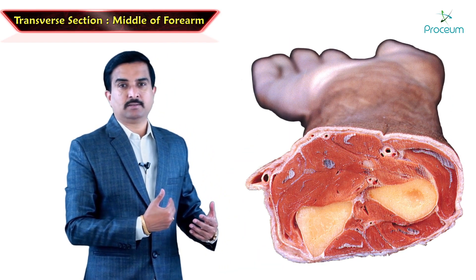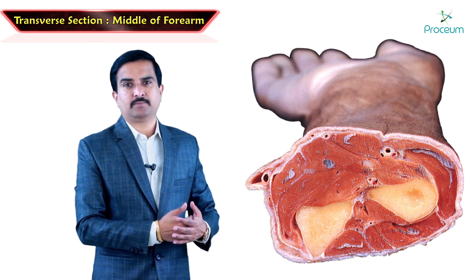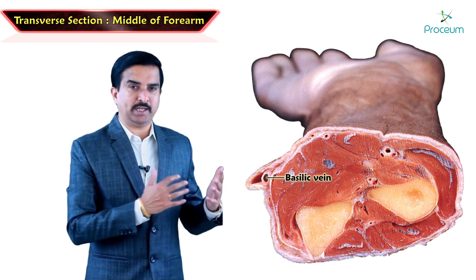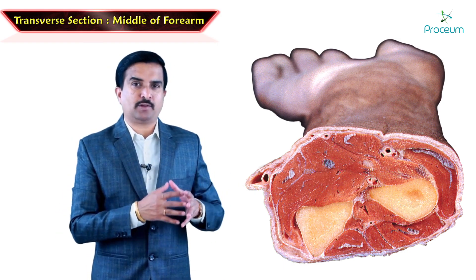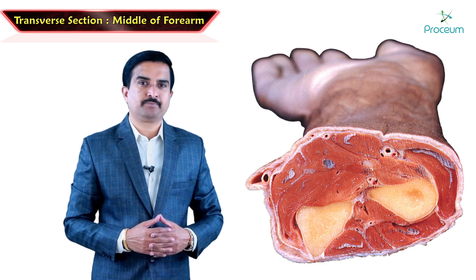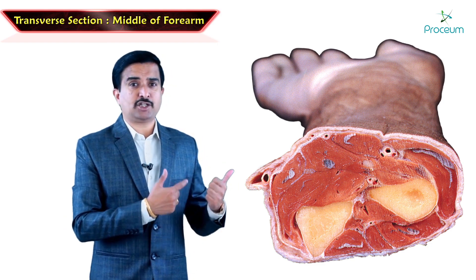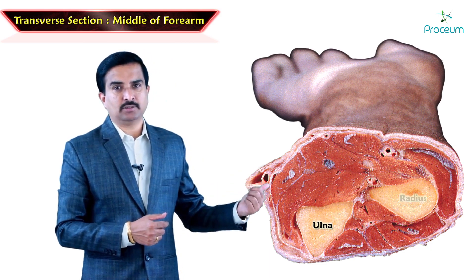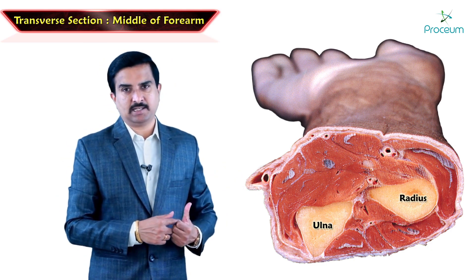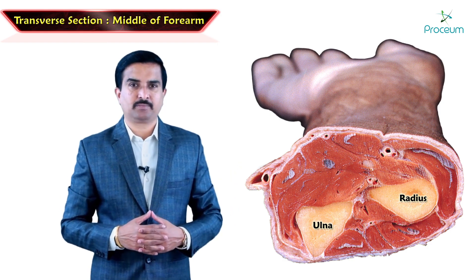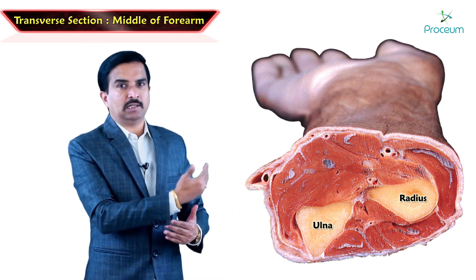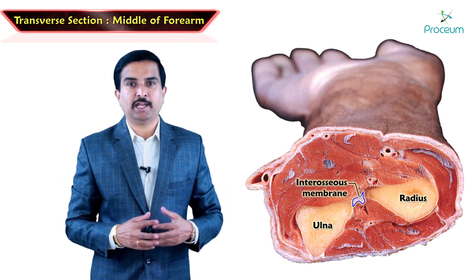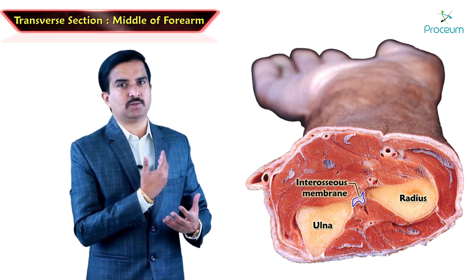On the medial side, just beneath the skin, there is a superficial vein which is the basilic vein. When you see this cross-section of the middle of the forearm, we can identify two important bones: ulna and the radius. Ulna on the medial side and radius on the lateral side. In between the ulna and the radius, the structure is called the interosseous membrane, which is also seen clearly.